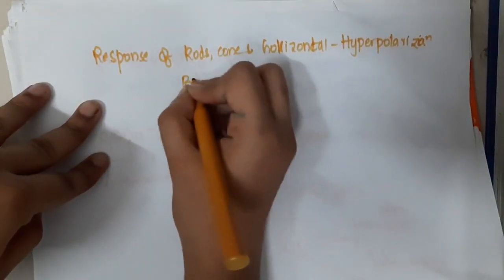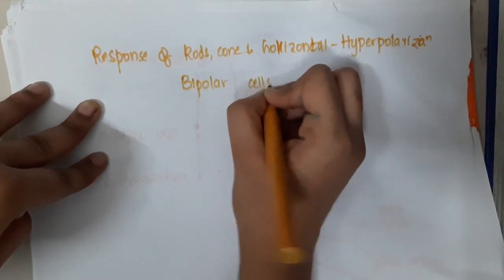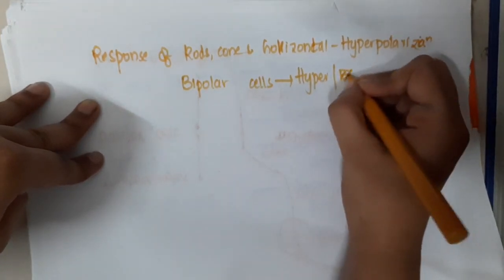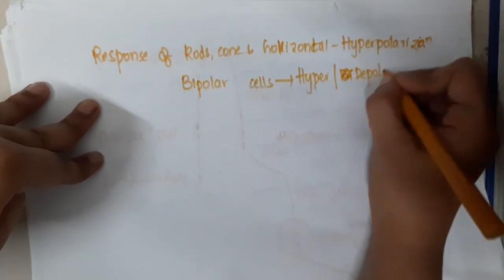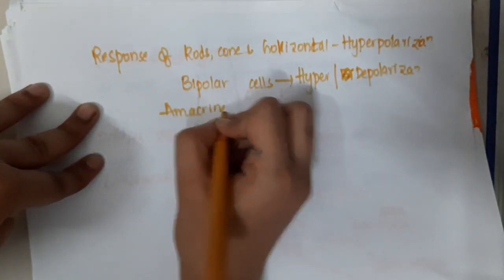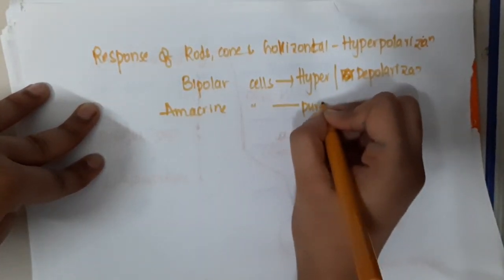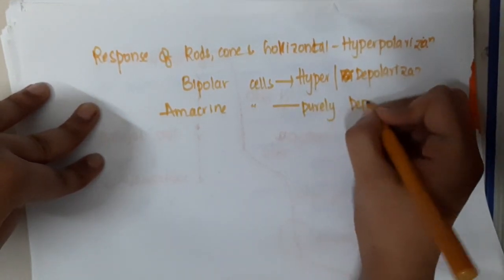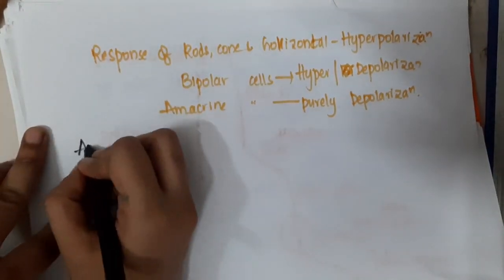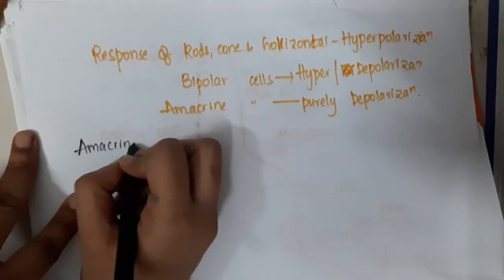Bipolar cells can undergo either hyperpolarization or depolarization. Amacrine cells are purely depolarizing cells — they undergo depolarization. Let us now learn some important points about amacrine cells.